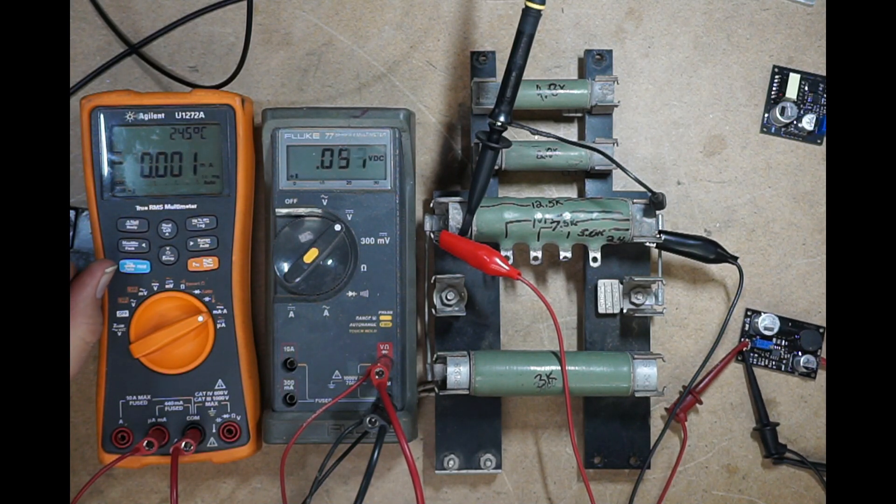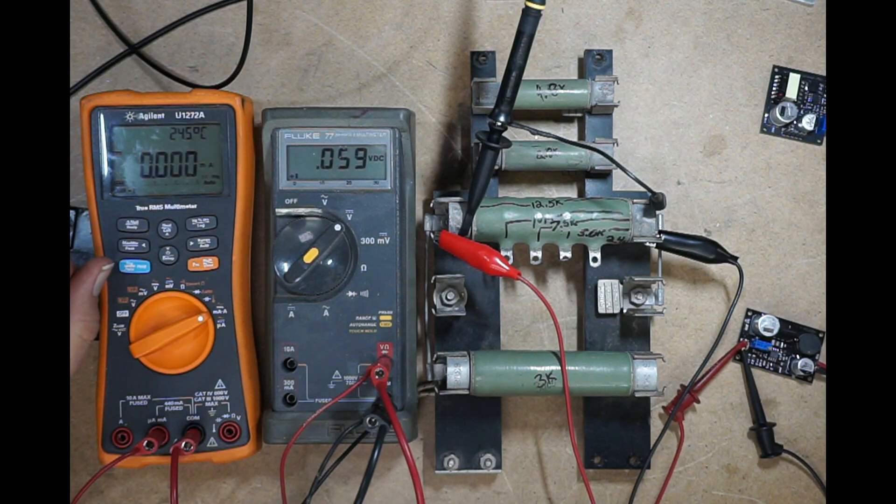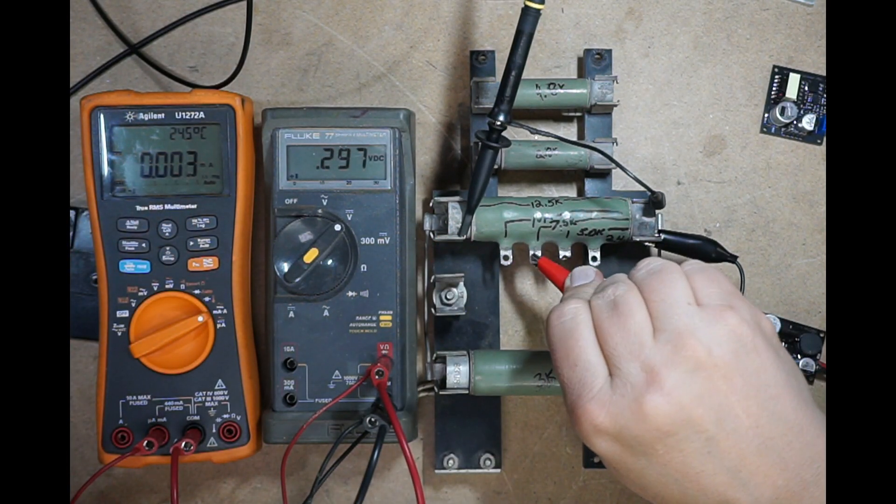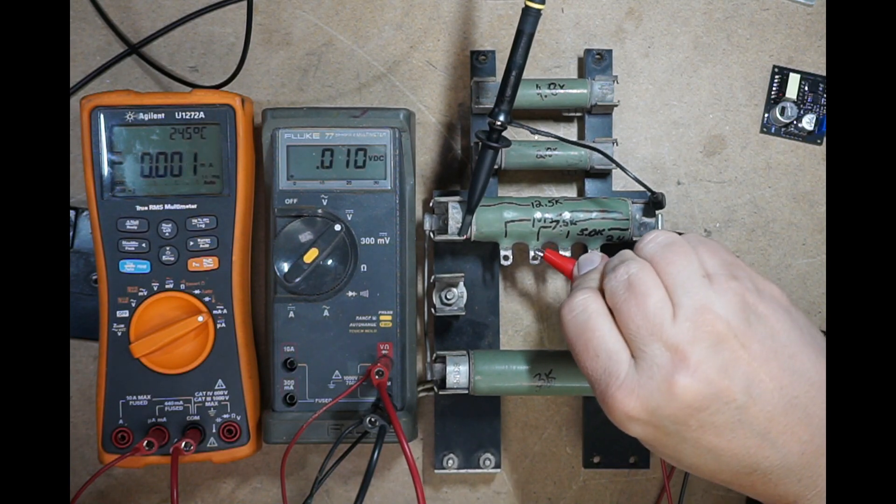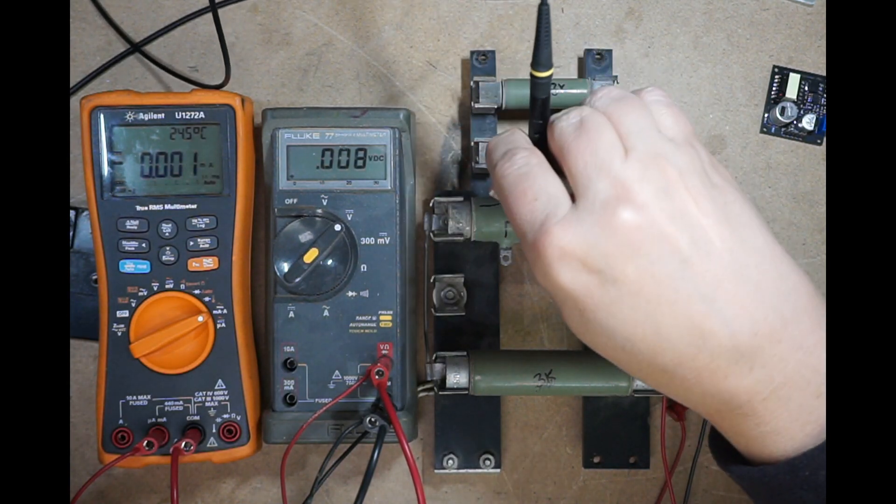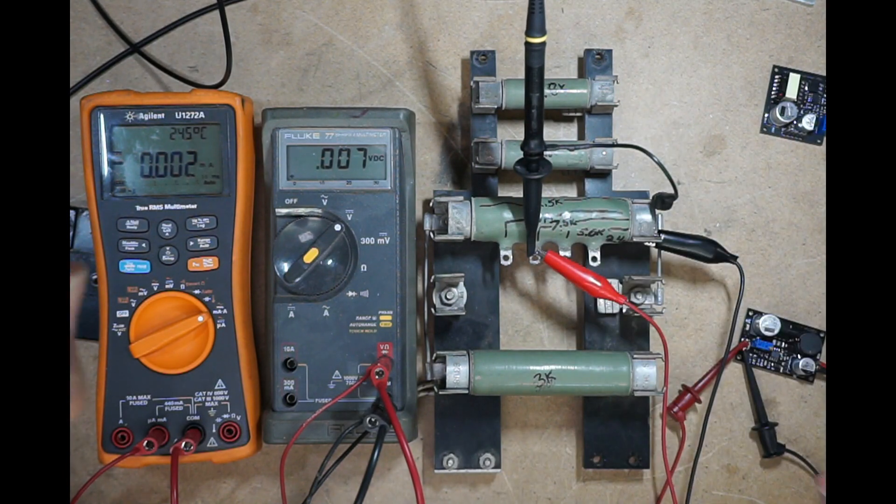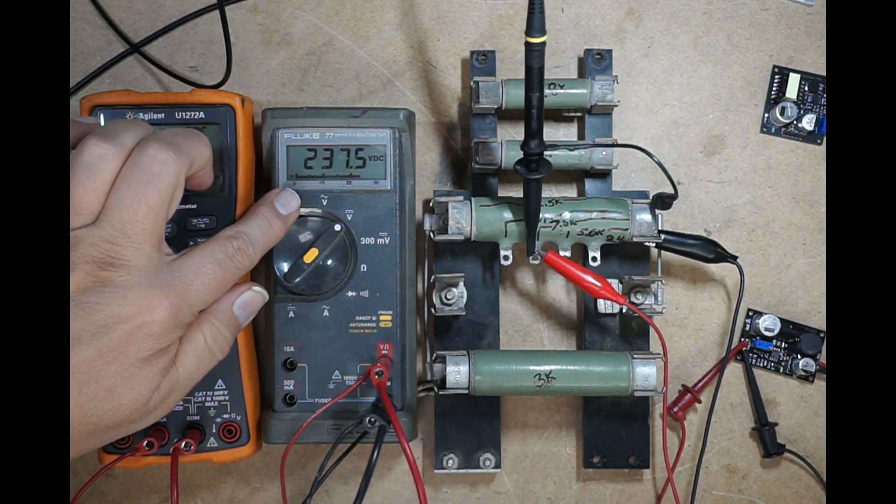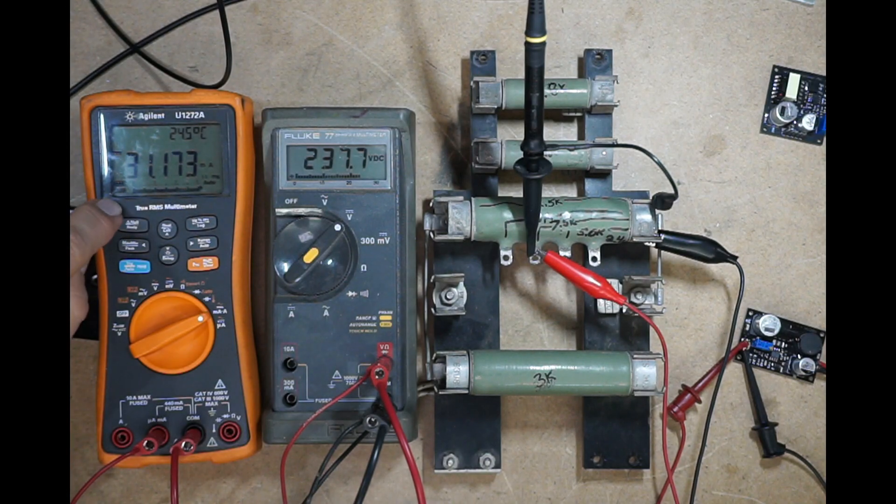Let's put a heavier load on it before I take this apart. Let's put a heavier load on it and see if that frequency changes at all. So we'll go down here to 7.5k. And it's back on, and now we're up at 237 volts at 31 milliamps.